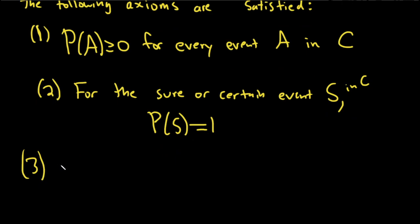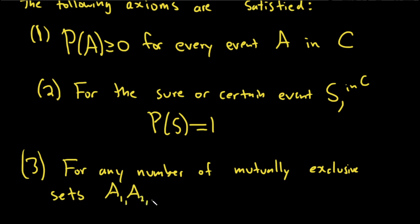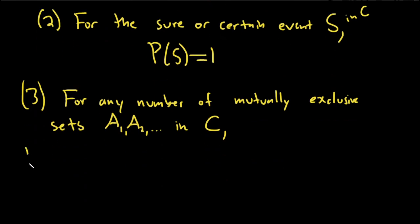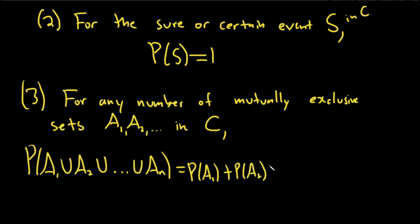And the third thing we need for a probability function is that for any number of mutually exclusive sets, A sub one, A sub two, etc. in C, when we take the union, the probability of that union is going to be a sum. So P of A one union A two union... equals P of A one plus P of A two plus dot dot dot.